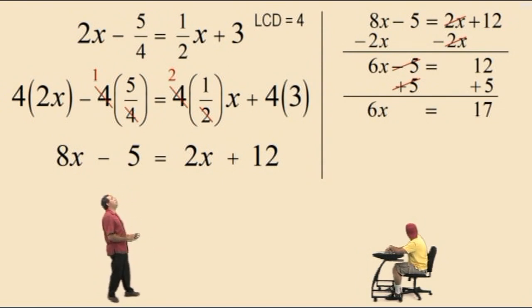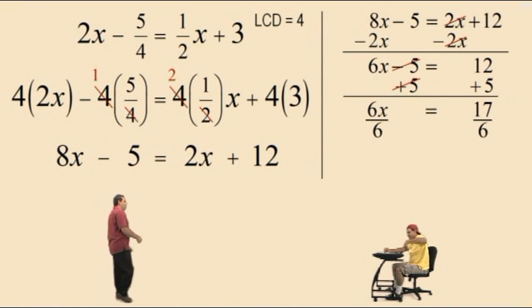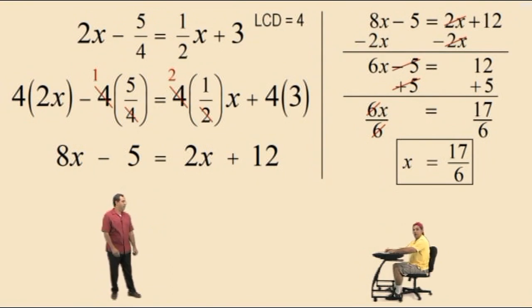And now finally, to get the 1x, we do what to both sides, Charlie? Divide by 6. That's right. And so we finally get x equals 17 over 6. Whew. Right? Anyway, let's do another one, Charlie. Here we go. We've got one more to go.